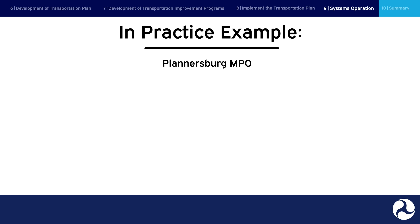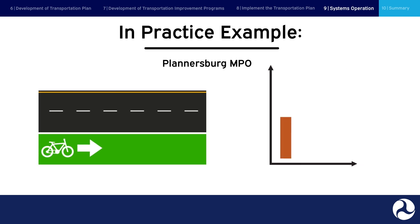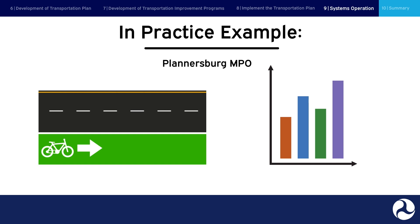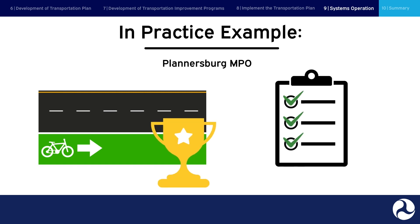In practice example: the construction of the bike lane is completed, and it opens to the public. The city monitors the project in order to find out if it meets the initial goal of diversifying transportation options beyond personal vehicles. Surveys are conducted with the public to gauge their response. It is deemed a success, and it is used as a case study for their plans to further expand their bike lane network.